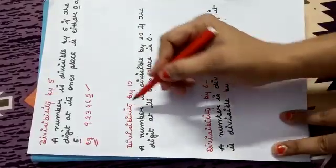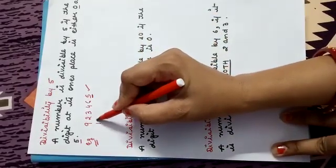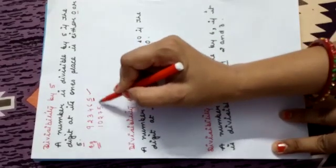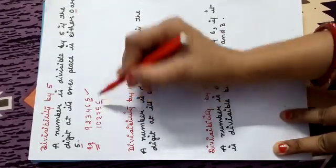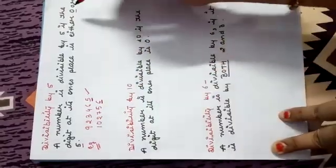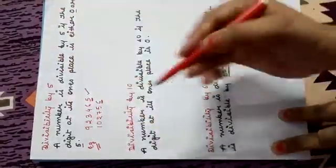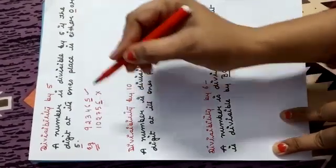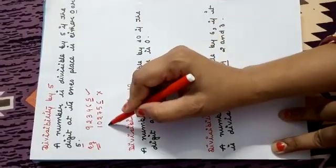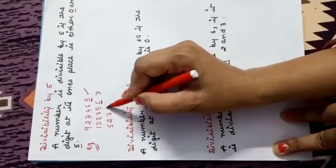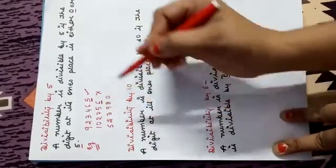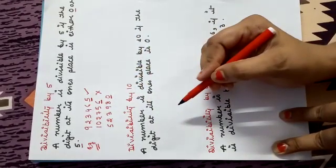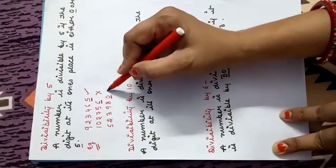Now see another example. If I write 102756 — here, see, at unit place it is 6, not 0, not 5. So this number is not divisible by 5. Now consider 523980 — here at 1's place it is 0, so this number is divisible by 5.